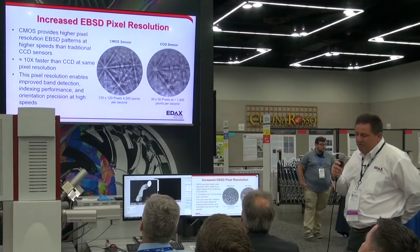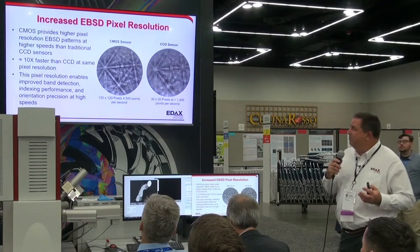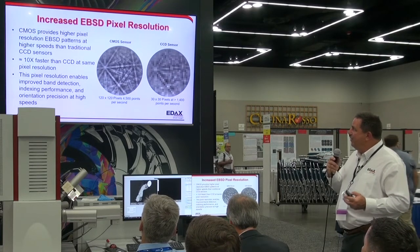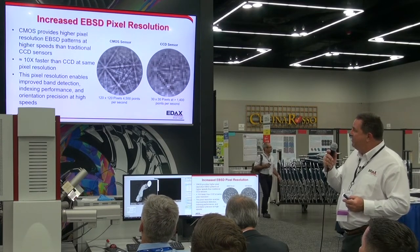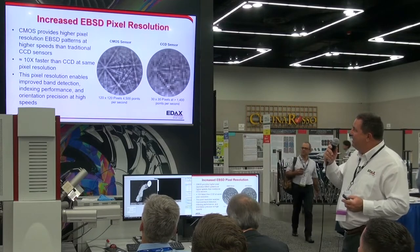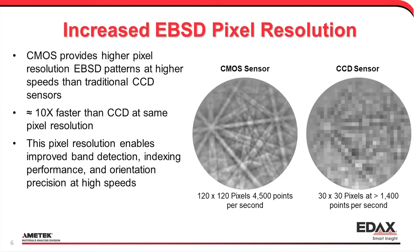One of the biggest advantages of going to CMOS high-speed operation is that at the speeds we use, the pixel resolution is higher. This is an example — a pattern from the CMOS Velocity at 4,500 patterns per second. You can see the number of pixels compared to a traditional CCD sensor where, at 1,400 or three times slower, we're operating with only 30 by 30 pixels. This allows improved band detection, higher indexing performance, and better orientation precision at high speeds.